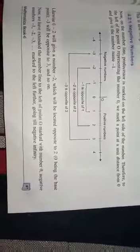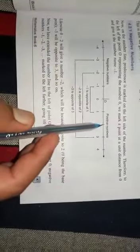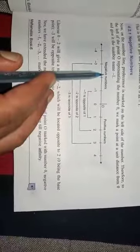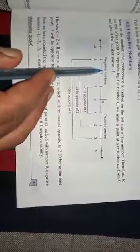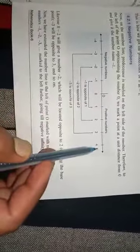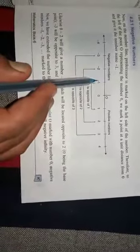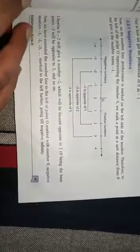Here this is a number line in which you have positive numbers on the right side and negative numbers on the left side. Positive numbers are one, two, three, four, five, six, seven, eight, nine and so on, and negative numbers are minus one, minus two, minus three, minus four, minus five, minus six and so on.